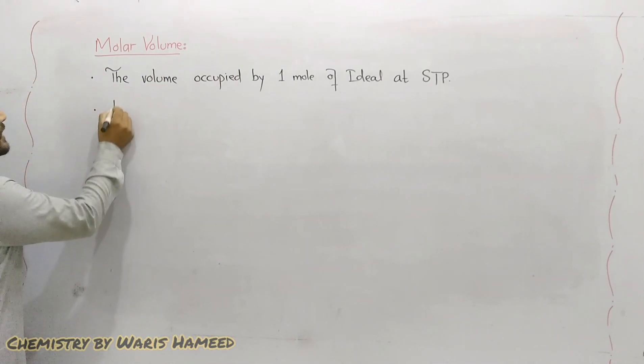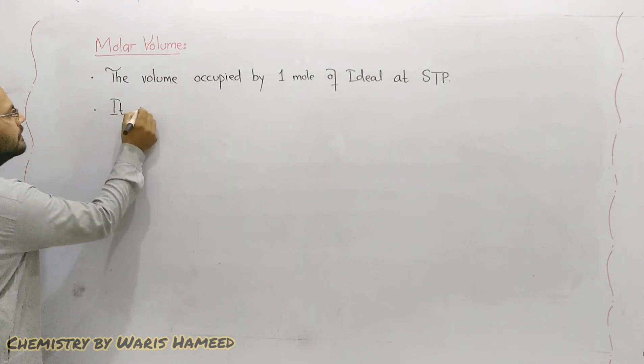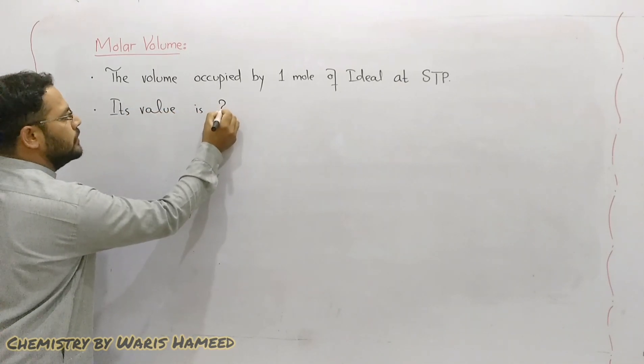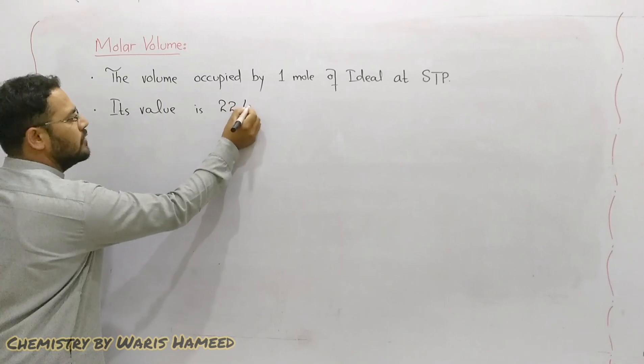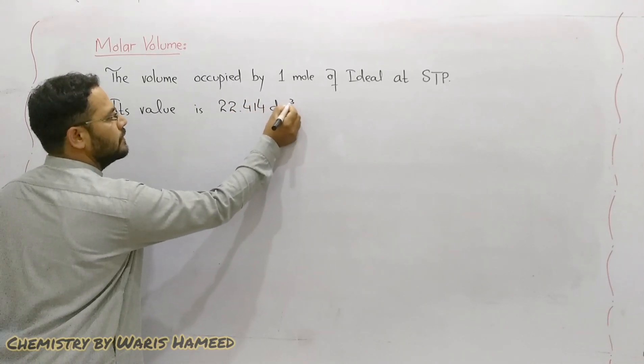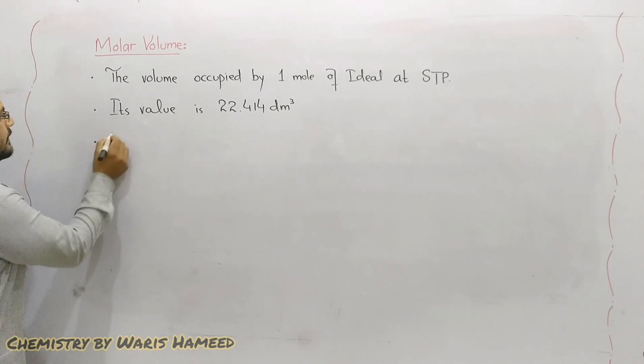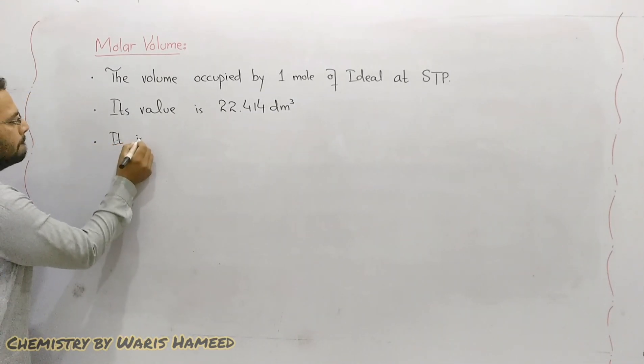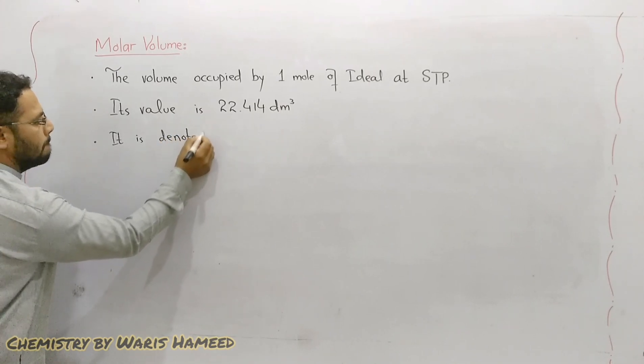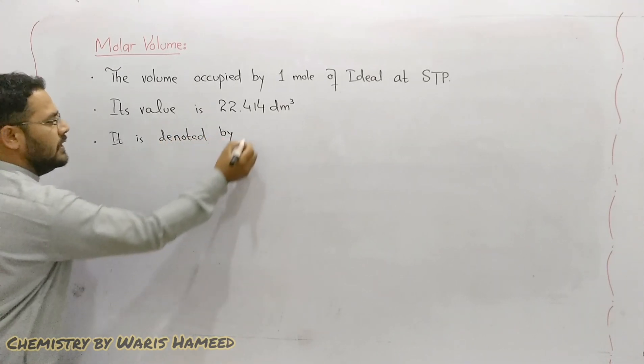Its value is 22.414 dm³ and it is denoted by Vm.